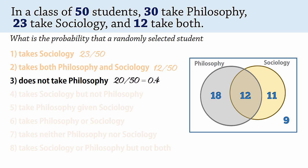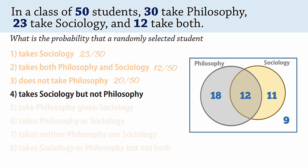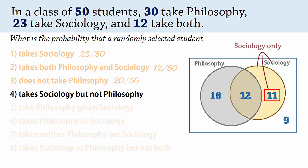That gives 0.4. For number 4, note that of these 23 students that take sociology, 12 of them also take philosophy. So the remaining 11 here take sociology but not philosophy — that is, sociology only. Therefore, the probability is 11 over 50, which is 0.22.